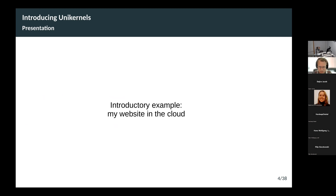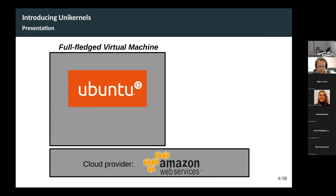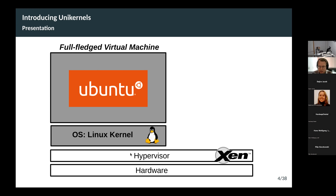Let's get started with what unikernels are. I have an introductory example I usually use. Suppose you want to run a website and you don't want to run it on your own computer because you don't have it running 24/7. So you want to run your website in the cloud. You rent a full-fledged virtual machine at a cloud provider, say AWS.